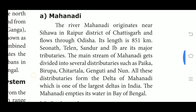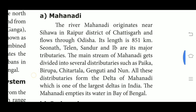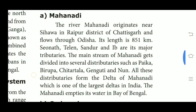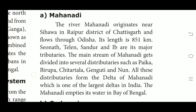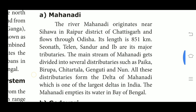Mahanadi is a major river in east central India. It rises in the highlands of Chhattisgarh and flows through Odisha to reach the Bay of Bengal. The length of the river is about 851 km. Its drainage basin is shared by Maharashtra, Chhattisgarh, Jharkhand and Odisha. The major tributaries of Mahanadi are Seonath, Telen, Sandur and Ib. The main stream of Mahanadi gets divided into several distributaries, which form the delta of Mahanadi — one of the largest deltas in India.